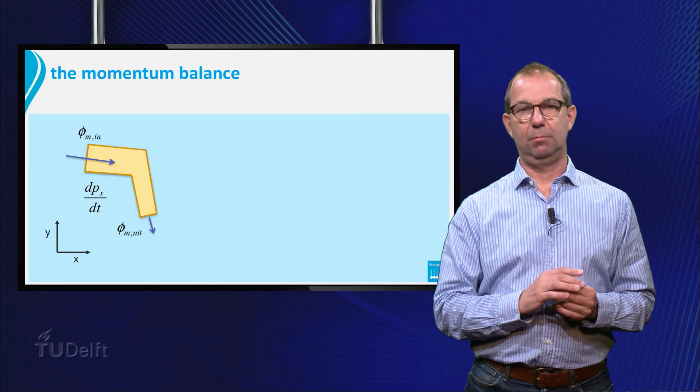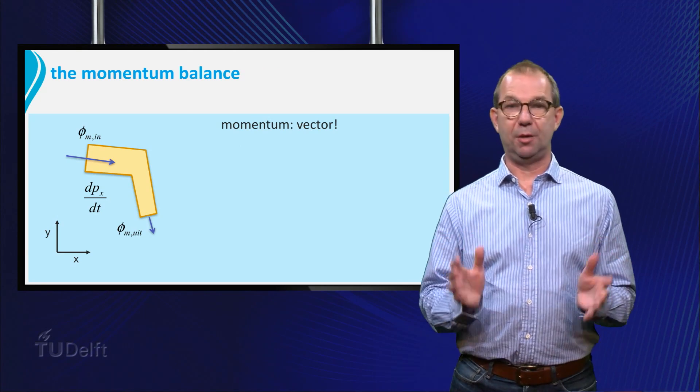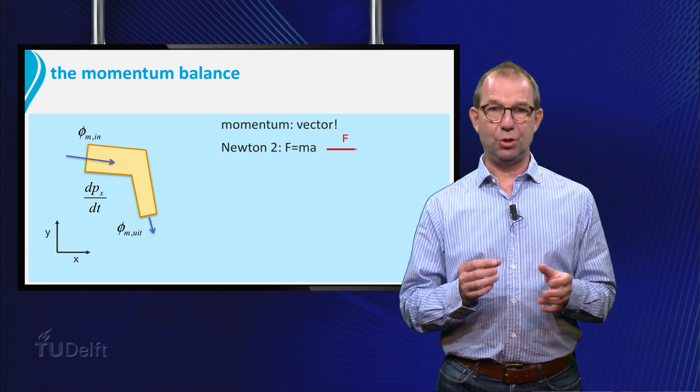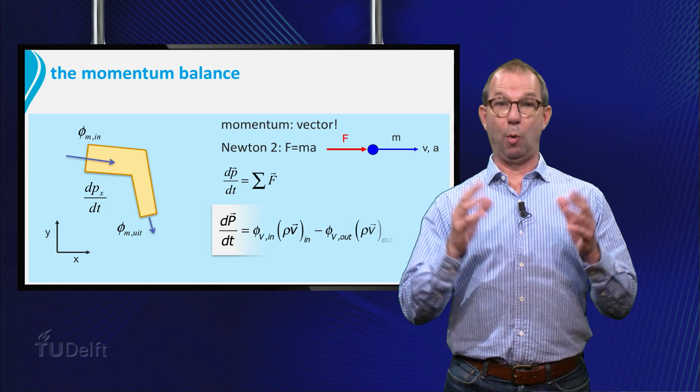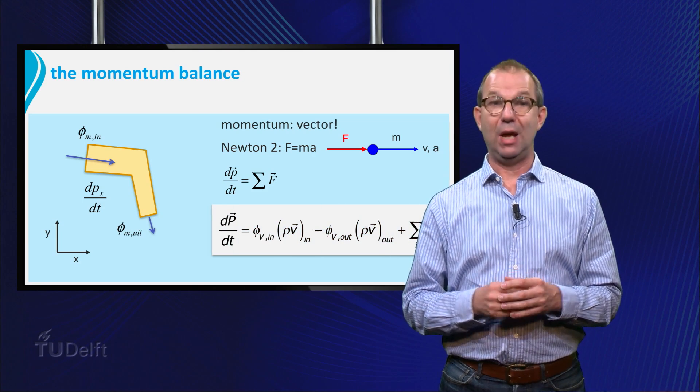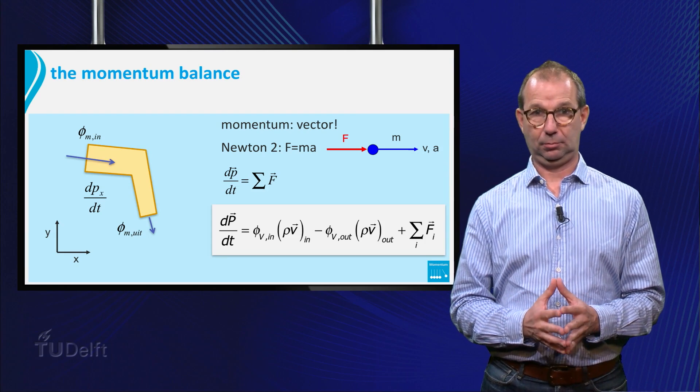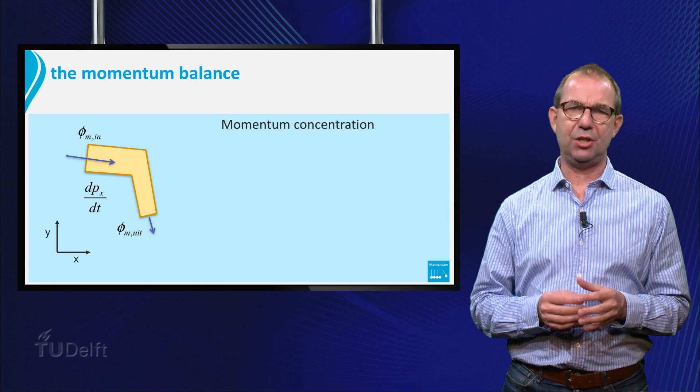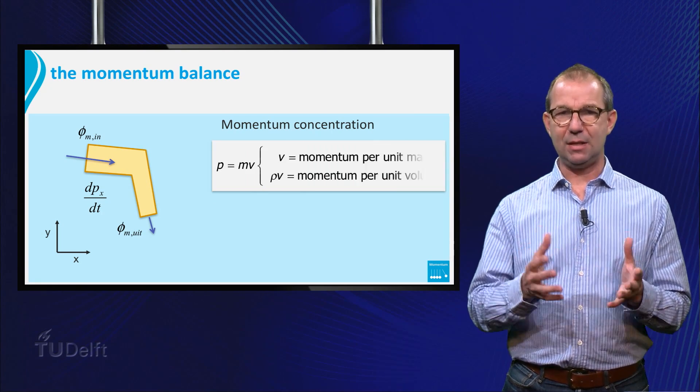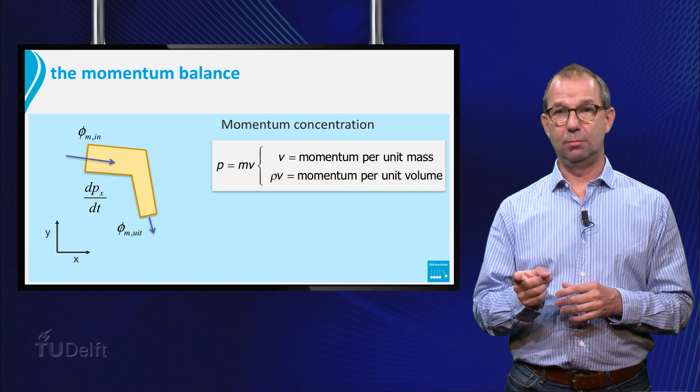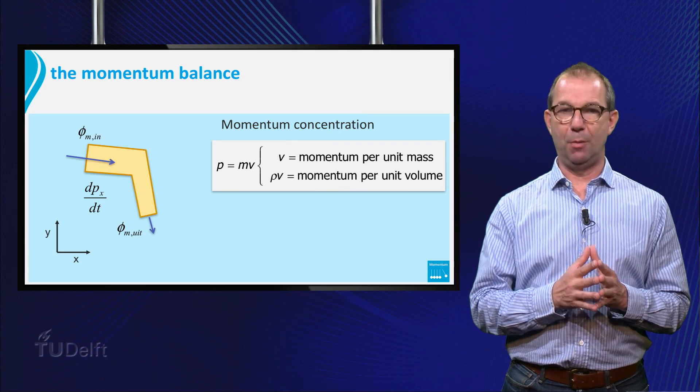To wrap up, we made a momentum balance with the same concept as all other previous balances. We came to the conclusion that force is production of momentum. That this is a vector quantity. And that Newton actually already wrote down a form of momentum balance. We realized that concentration of momentum is density times velocity. And that that can be flowing into our control volume. That gave us the general format of the momentum balance.